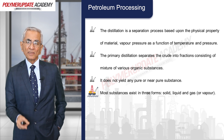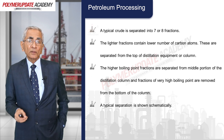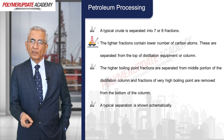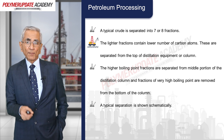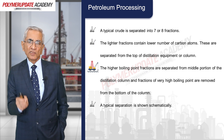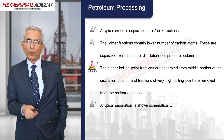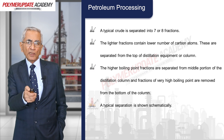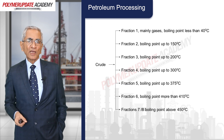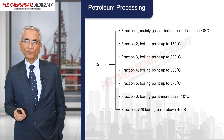Most substances exist in three forms: solid, liquid, and gas (vapor). A typical crude is separated into seven or eight fractions. The lighter fractions contain a lower number of carbon atoms and are separated from the top of the distillation column. Higher boiling point fractions are separated from the middle of the column, and fractions of very high boiling point are removed from the bottom. A typical separation process is shown schematically.